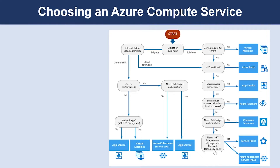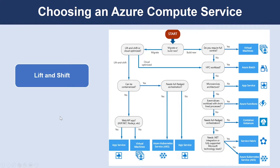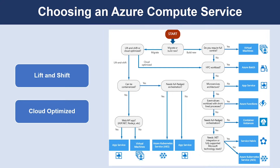If you don't need Service Fabric, then you can go with Azure Kubernetes Service. Lift-and-shift is a strategy for migrating a workload to the cloud without redesigning the application or making code changes — also called re-hosting. Cloud-optimized is a strategy for migrating to the cloud by refactoring an application to take advantage of cloud-native features and capabilities.